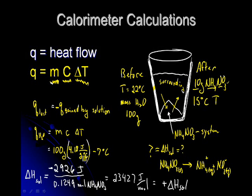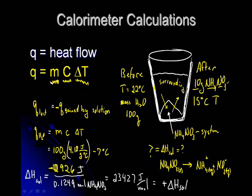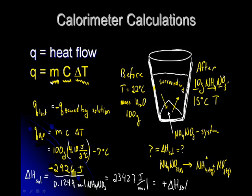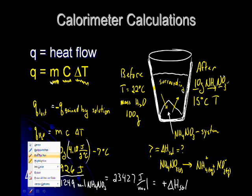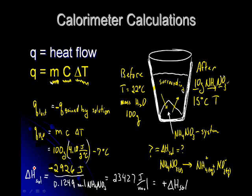So we get the product of that, and we find that that is negative 2,926 joules. Now remember that the heat gained by the solution, the heat gained by our system, is just the opposite in sign.